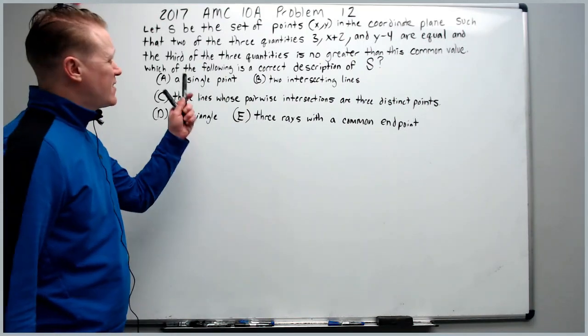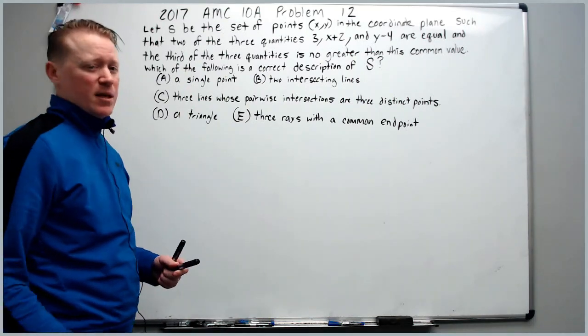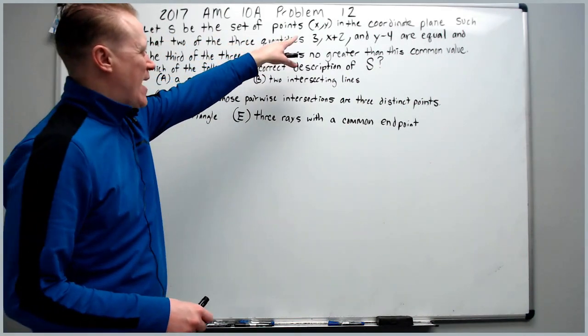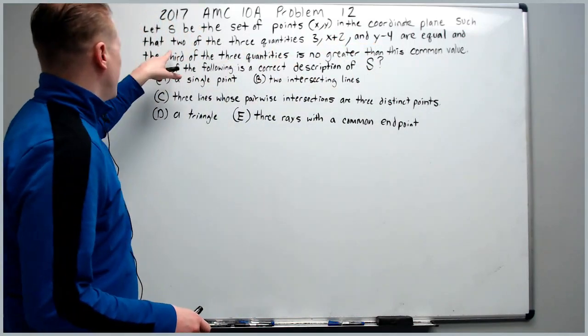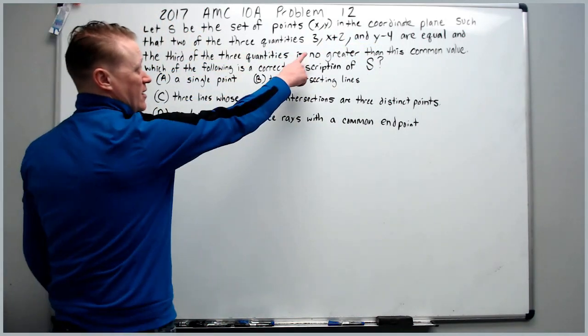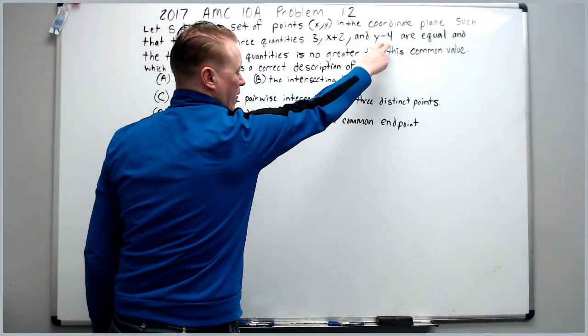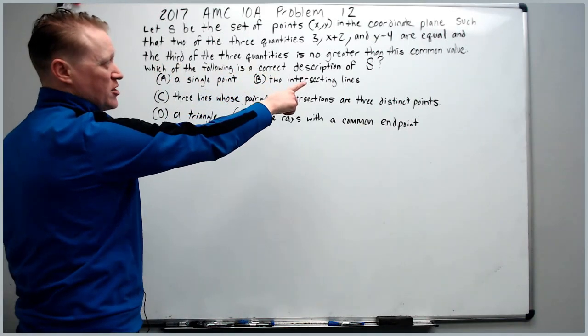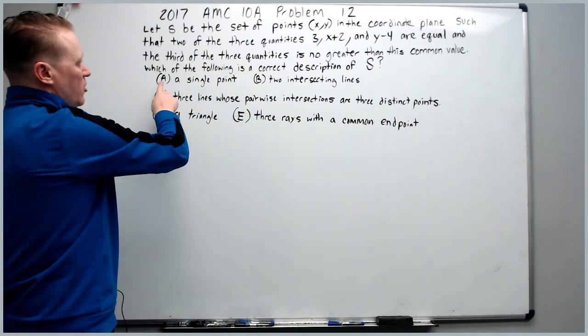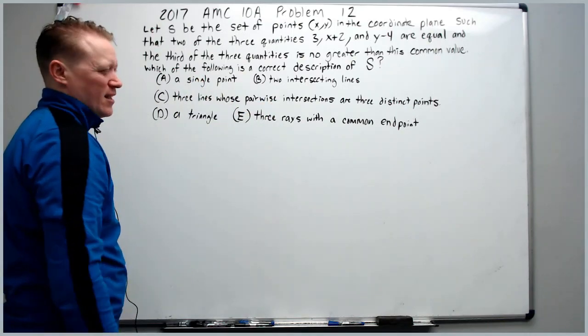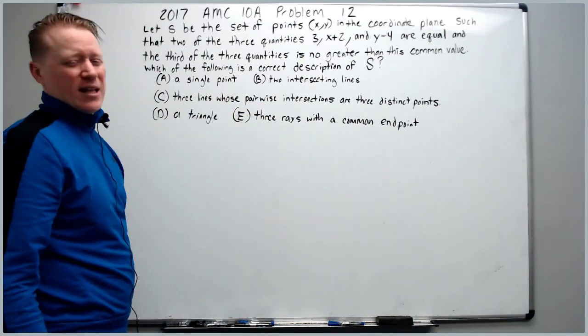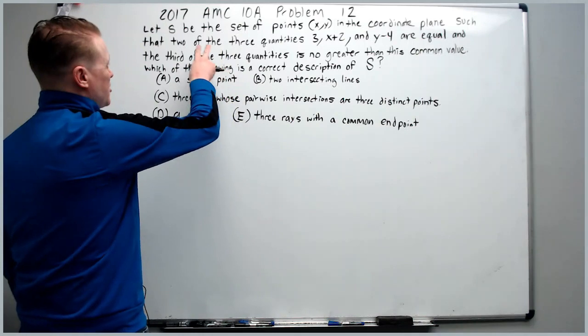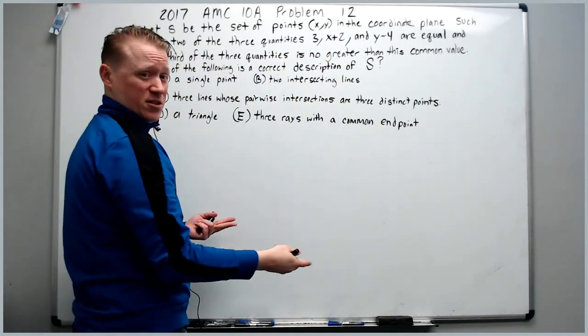Now we'll solve the 2017 AMC 10A problem number 12. Let S be the set of points (x,y) in the coordinate plane such that 2 of the 3 quantities 3, x+2, and y-4 are equal and the third is no greater than this common value. I don't advise looking at the answers. Just start working with what they say. It says 2 of the 3 are equal, so just grab the first 2 and start going.